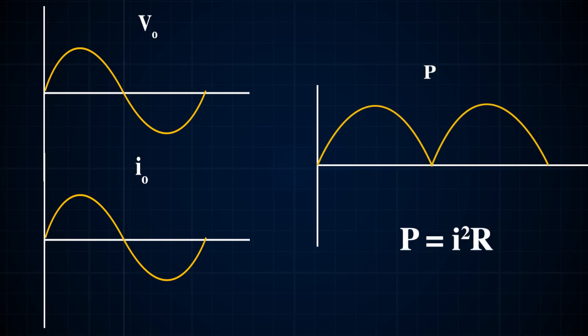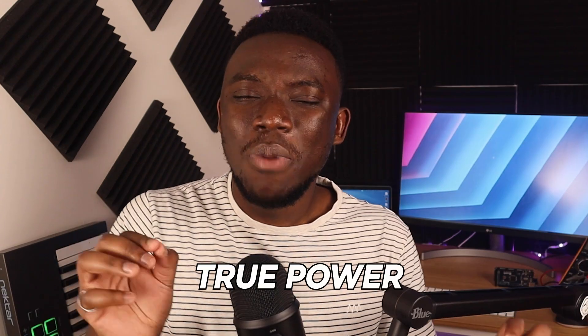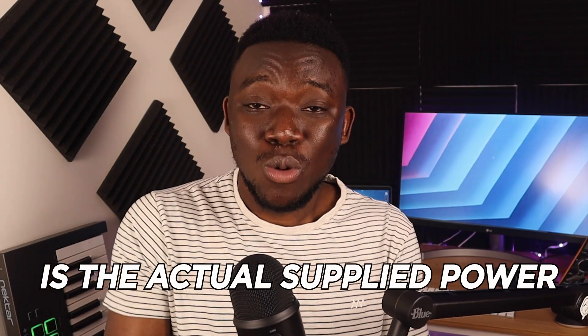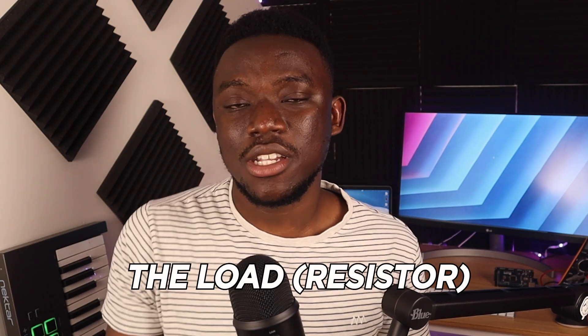Now if you take a multimeter and measure the current and voltage at this particular point, you would notice at each instance that the total power is either positive or zero, proving that all power in the circuit is flowing in one direction, which is away from the source. All the power being dissipated is called true power — in other words, true power is the actual power that is being used by the resistor.